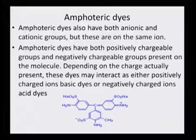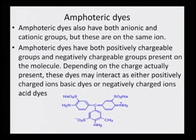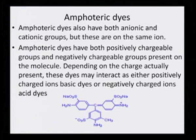There are also amphoteric dyes, having both anionic and cationic groups in the same molecule. Amphoteric dyes have both positively chargeable groups and negatively chargeable groups present on the molecule. Depending on the charge actually present, these dyes may interact as either positively charged ions (basic dyes) or negatively charged ions (acid dyes). Both COO⁻ and NH₂⁺ groups are present on the same moiety.